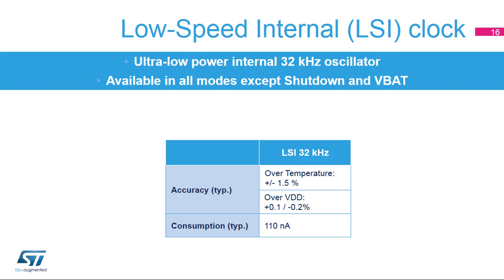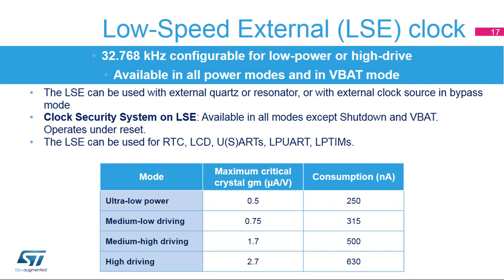The LSI consumption is typically 110 nanoamps. The 32.768 kHz low-speed external oscillator can be used with external quartz or resonator or with an external clock source in bypass mode. The oscillator driving capability is programmable — four modes are available, from ultra-low-power mode with a consumption of only 250 nanoamps to high-driving mode. A clock security system monitors for failure of the LSE oscillator; in case of failure, the application can switch the RTC clock to the LSI. The CSS is functional in all modes except shutdown and VBAT, and is also functional under reset. The LSE can be used to clock the RTC, the LCD, the USARTs or low-power UART peripherals, and the low-power timers.